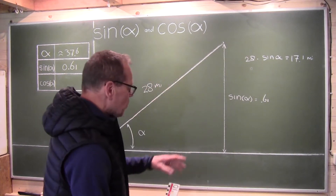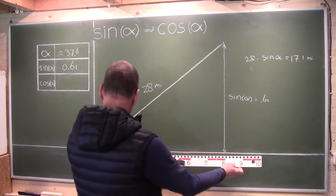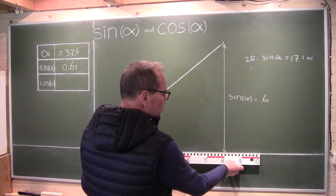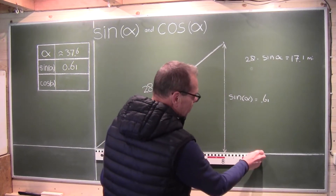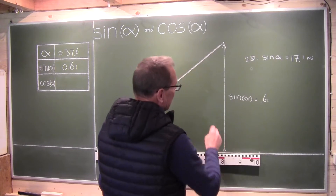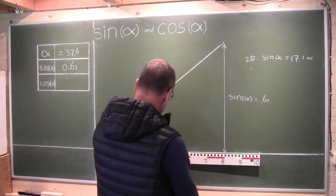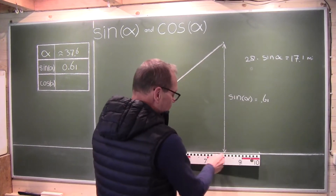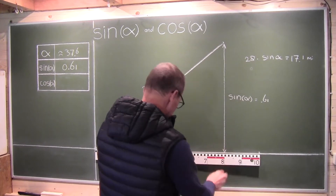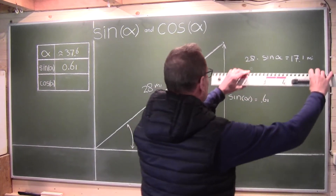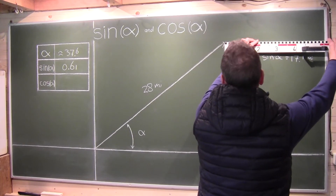Well, cosine is simply what remains of your forward movement. If you would have moved forward without that angle alpha, you would have moved forward to about here. But you haven't — because you've used this angle alpha, you've actually moved forward less than you would have without the angle. Now this remainder here is the cosine. And if I've drawn this correctly, let me see if that's about the case.